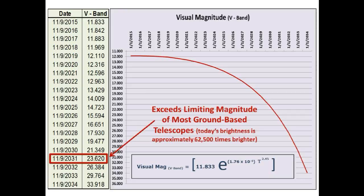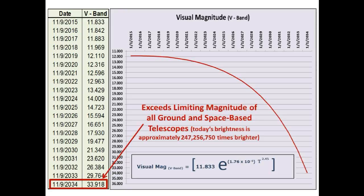Our prediction is that for all space-based telescopes, Tabby Star will fade to black in the year 2034. Today's brightness of Tabby Star will be approximately 250 million times brighter than it will be in 2034.